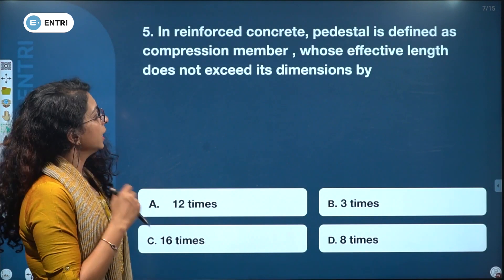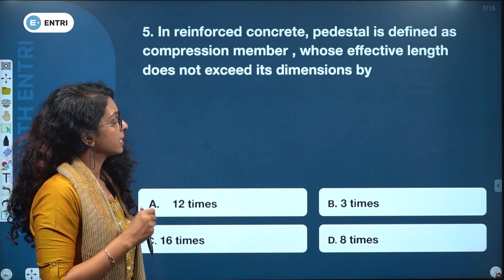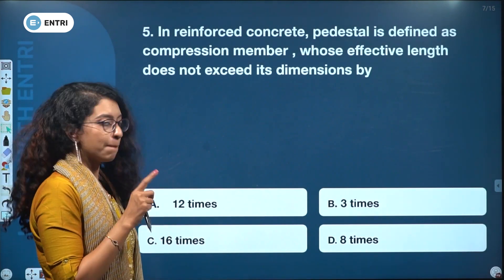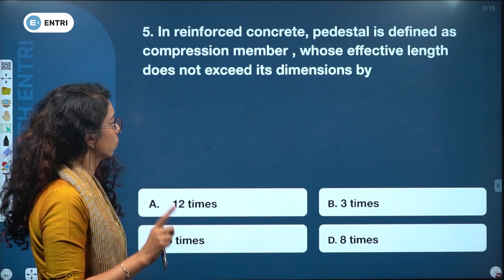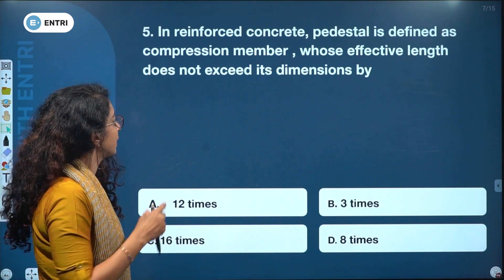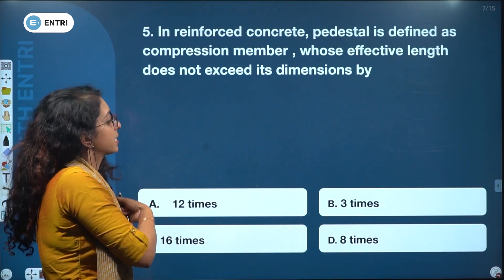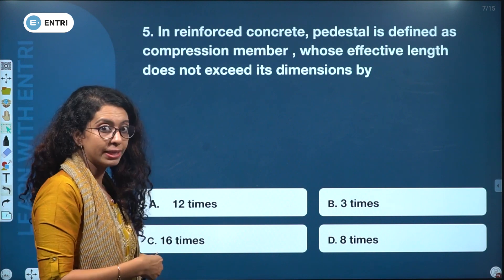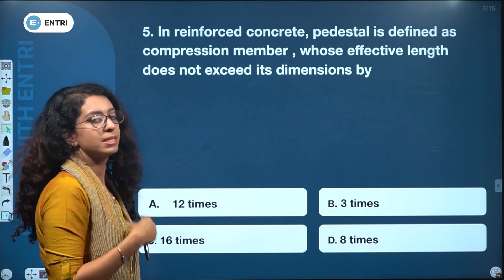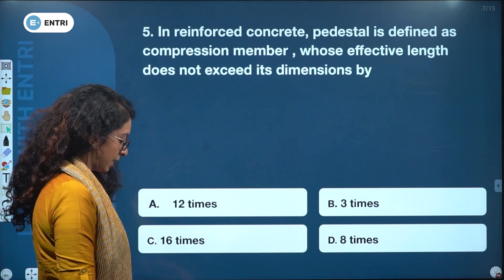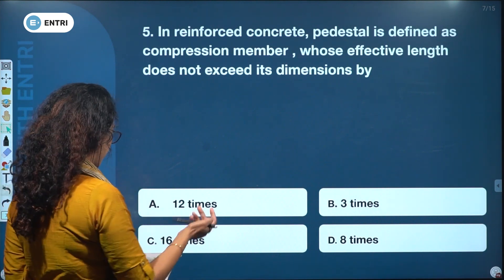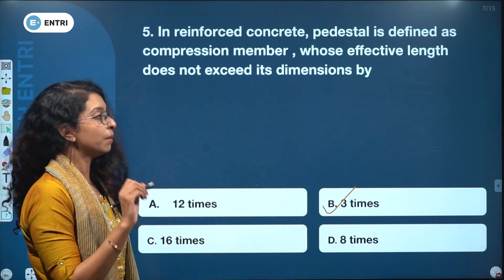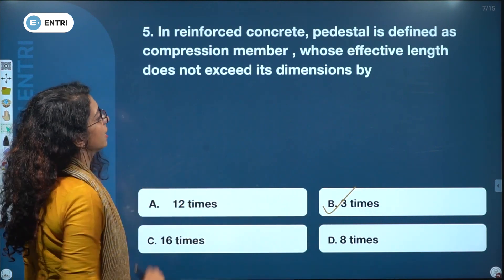In reinforced concrete, a pedestal is defined as a compression member whose effective length does not exceed its least lateral dimension by 12 times, 3 times, 16 times, or 8 times. The answer is 3 times.